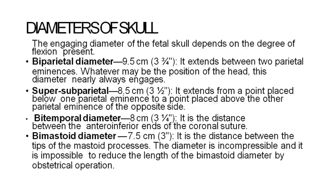Diameters of the fetal skull: The engaging diameter of the fetal skull depends on the degree of flexion present. The biparietal diameter is 9.5 cm and extends between the two parietal eminences. Whatever may be the position of the head, this diameter nearly always engages.